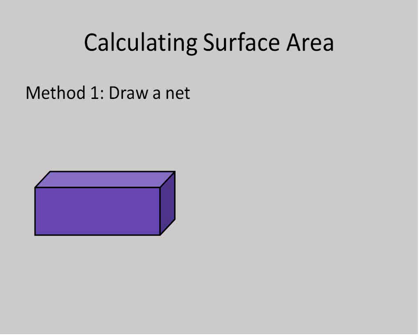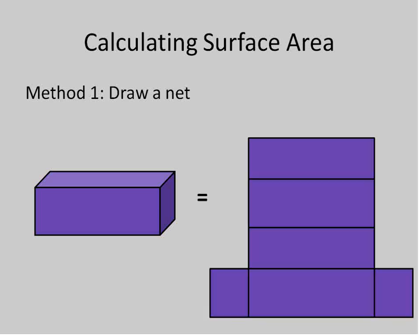Now what a net is, is when you take a rectangular prism like this for example, and you draw out basically all of the surfaces. So if I were to take this, like if I had this on a piece of paper or something, I could fold it on these lines and it would make this rectangular prism. So that's basically what this is. A net is a way to show us all the surface area in a flat way.